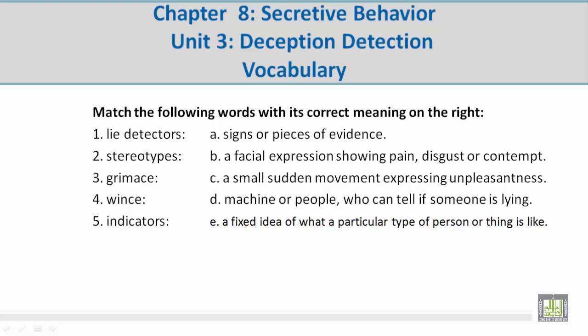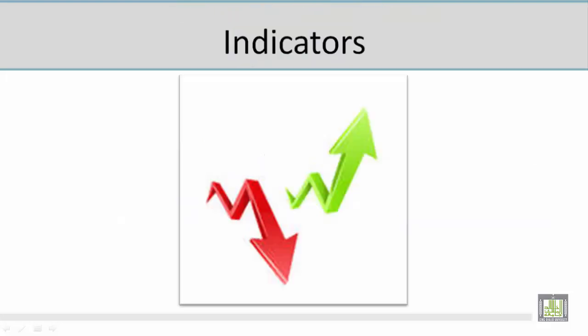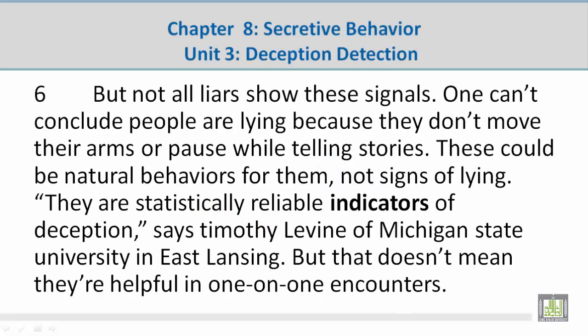Number 5: Indicators. Mohamed, please give us the correct meaning. A — signs or pieces of evidence. Let's take a look at a picture related to 'indicators.' I see signs or pieces of evidence — something going up or something going down. The sentence reads: they are statistically reliable indicators of deception.